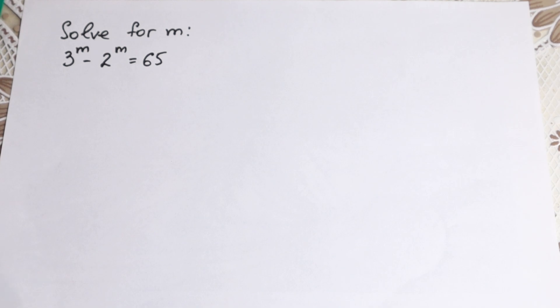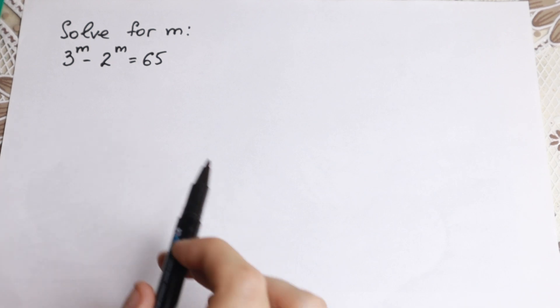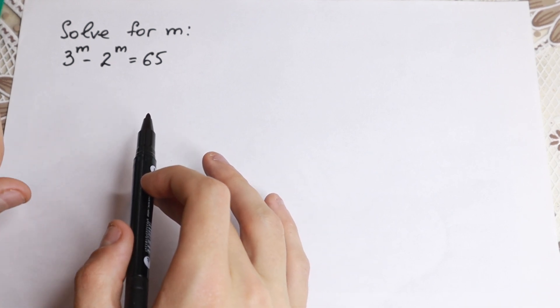Hello everyone! Welcome back to Higher Mathematics! Happy to see you here! Really interesting problem today. We have 3 to the m minus 2 to the m equal to 65.